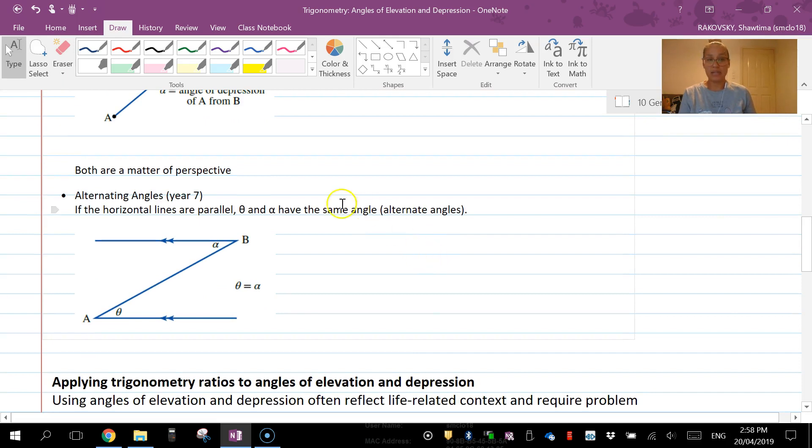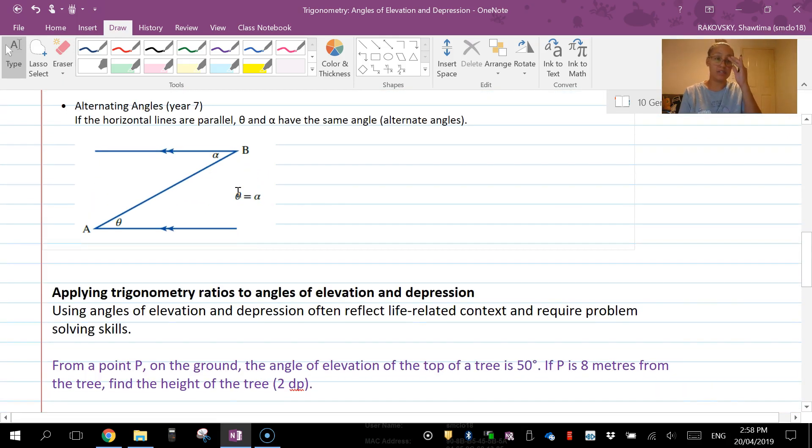The last thing I want to recap on is alternating angles. So this is a year 7 concept. You've got two parallel lines, this is the rule that we have here. Two parallel lines and when they're cut with a transversal, in this case here it just happens to not go beyond those parallel lines. These angles are going to be equal.